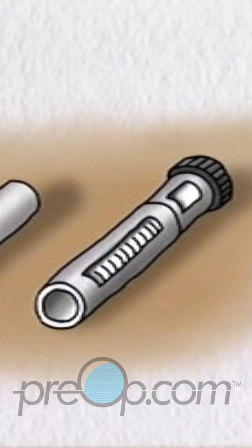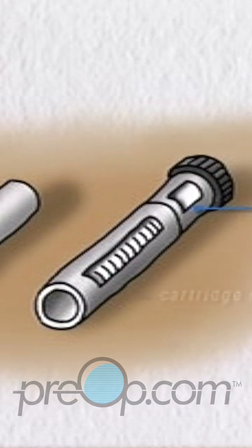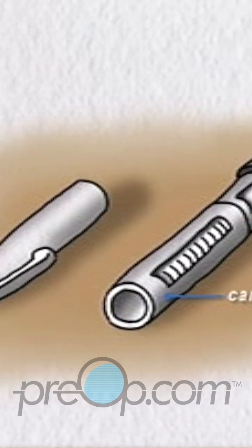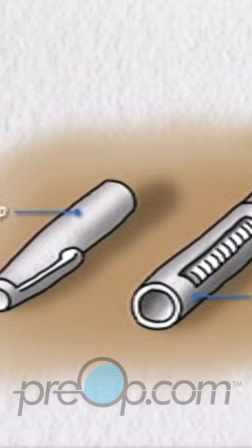An insulin pen has three components: a base, which contains the mechanism for measuring the correct dose; a holder for the cartridge of insulin; and a cap, which is removed and replaced by the needle prior to the injection.